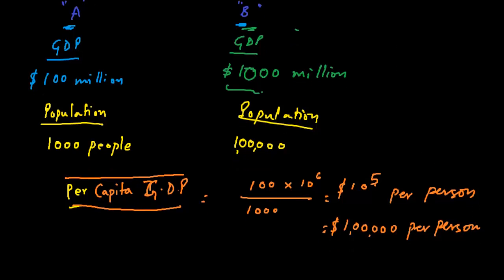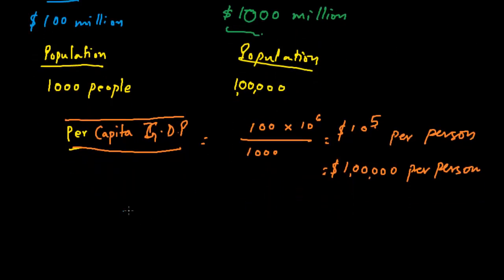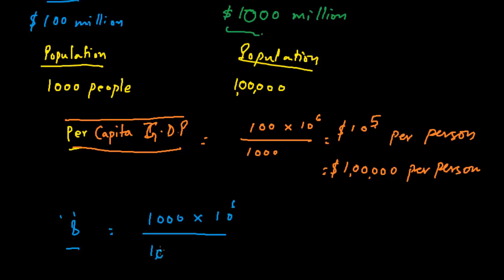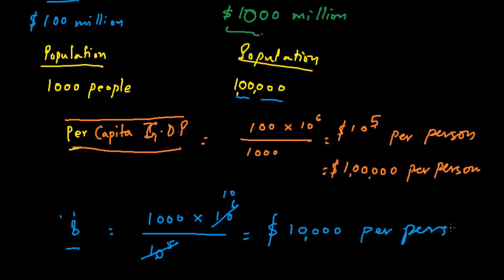And in country B, the per capita GDP would be one thousand million dollars — that is 10 to the power 6 — upon one lakh people, that is 10 to the power 5. So it comes out to be ten thousand dollars per person.